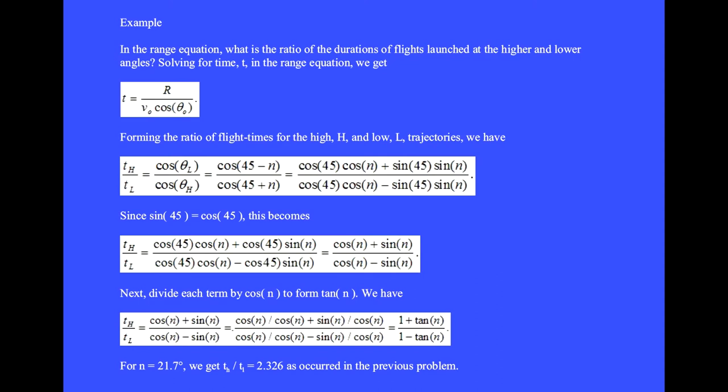In the range equation, what is the ratio of the durations of flights launched at the higher and lower angles? Solving for t in the range equation we get t equals r divided by the initial velocity v₀ times the cosine of the launch angle θ₀. Forming the ratio of flight times for the high h and low l trajectories we have t_h divided by t_l. After canceling the common factors we have cosine of θ_l divided by cosine of θ_h.